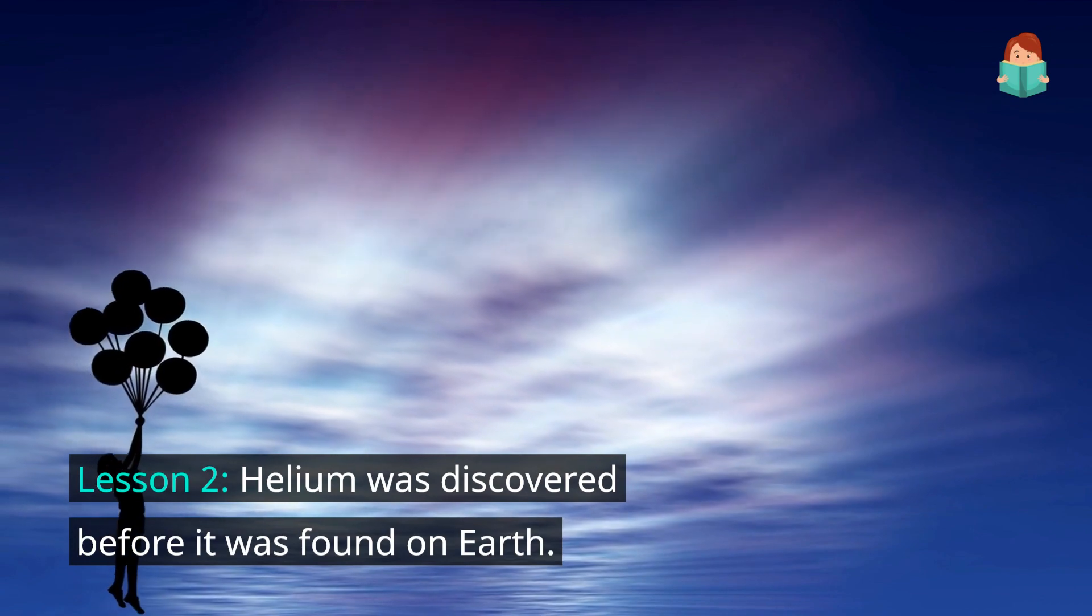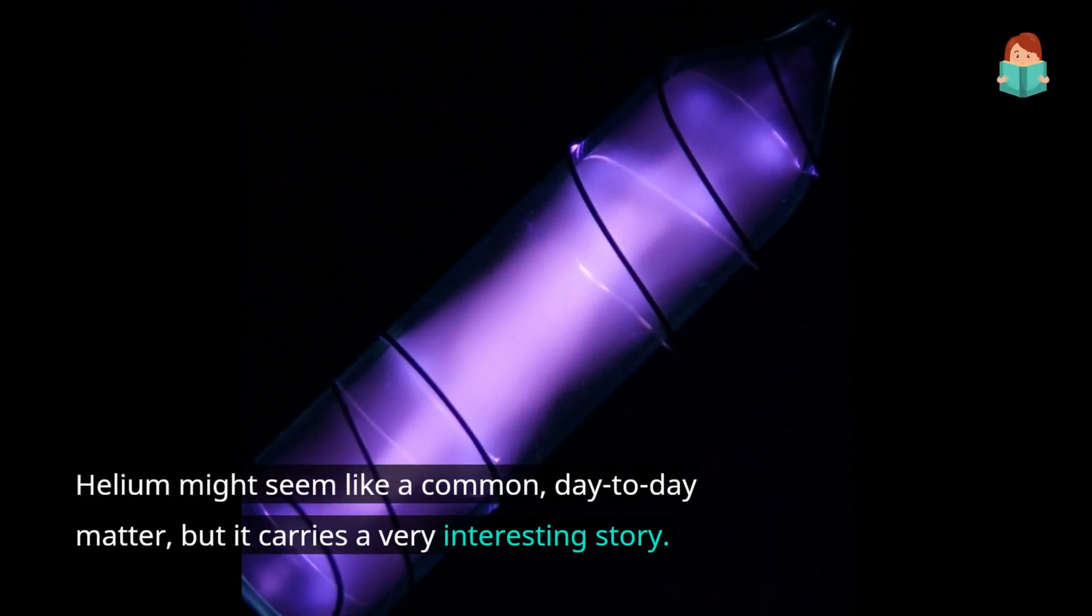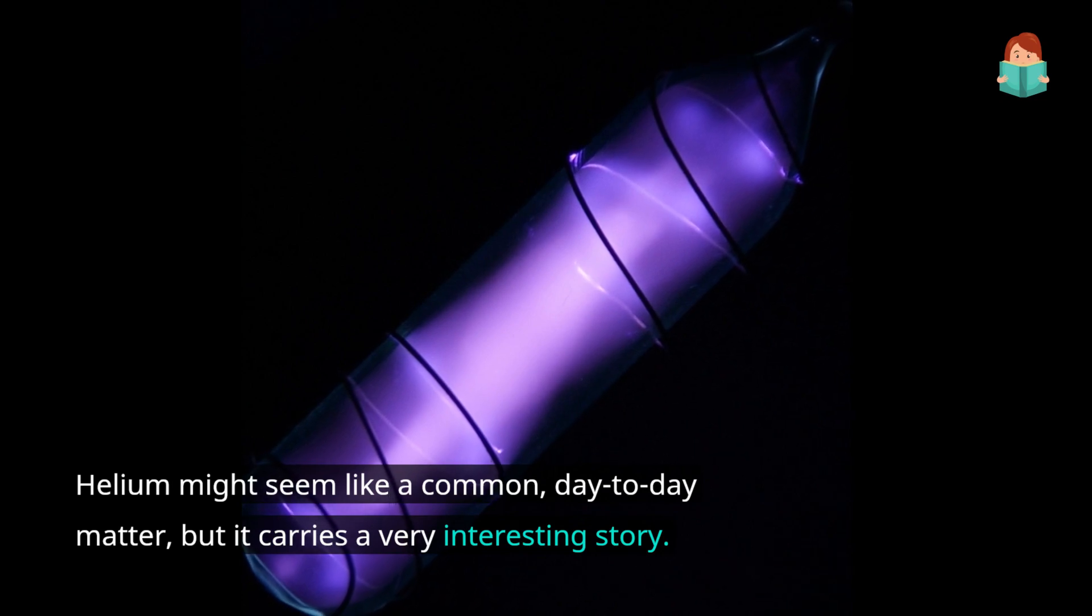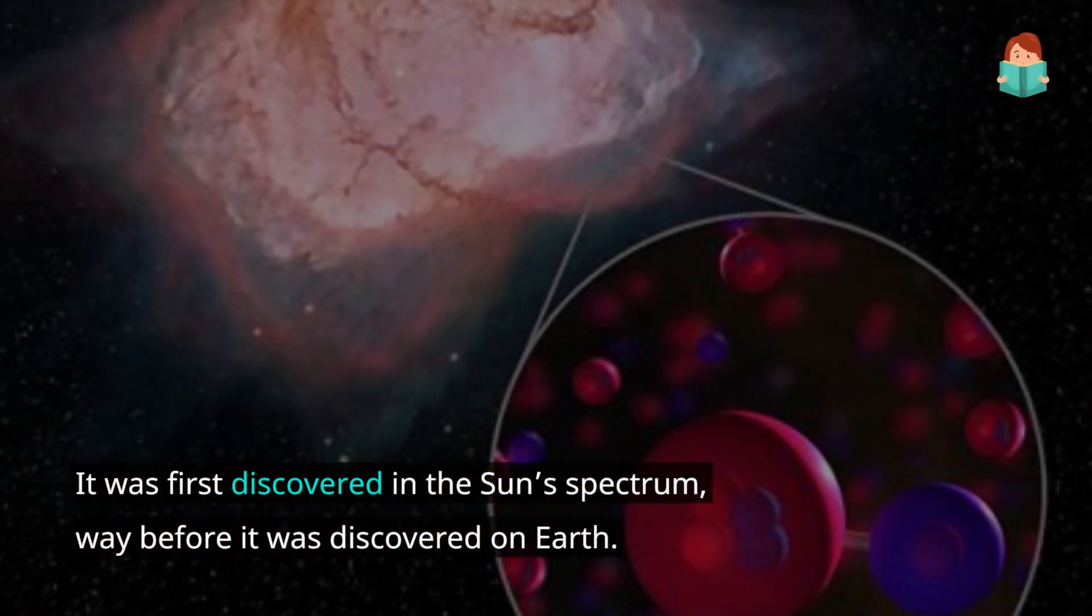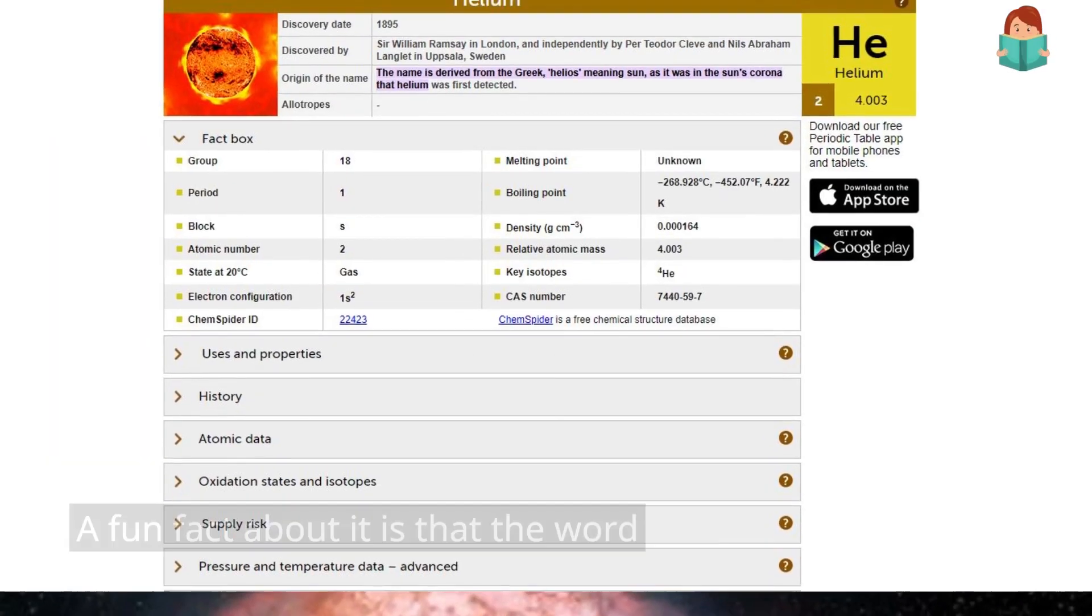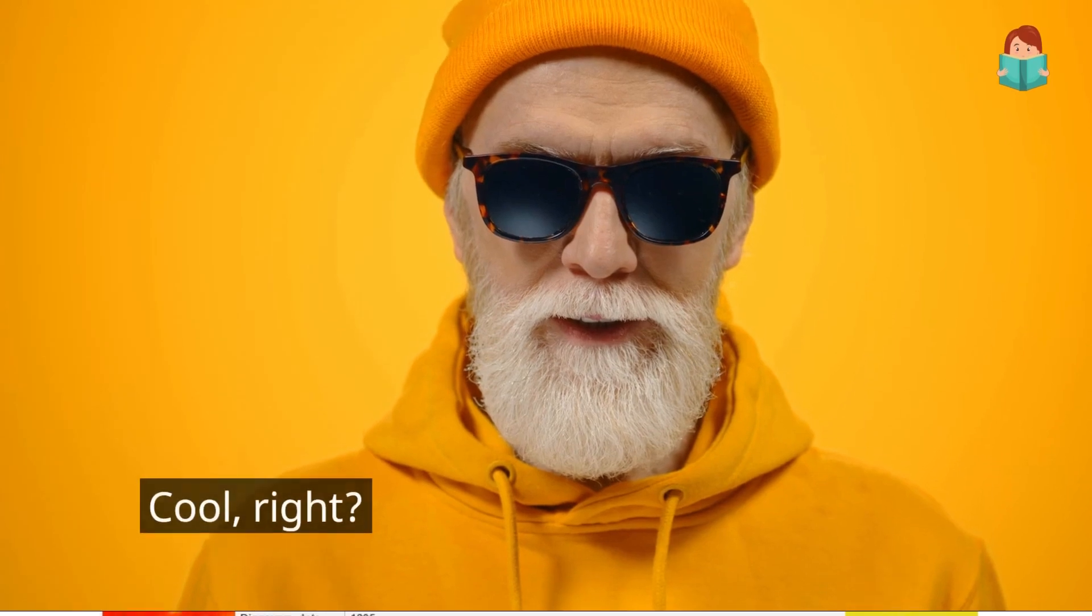Lesson 2: Helium was discovered before it was found on Earth. Helium might seem like a common day-to-day matter, but it carries a very interesting story. It was first discovered in the sun spectrum, way before it was discovered on Earth. A fun fact about it is that the word helium means sun in Greek. Cool, right?